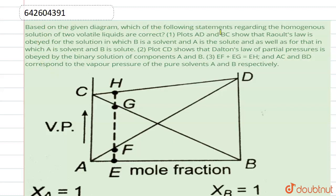Hello everyone. The question is based on the given diagram: which of the following statements regarding the homogeneous solution of two volatile liquids are correct? Statement 1: plots AD and BC show that Raoult's law is obeyed for the solution in which B is solvent and A is solute, as well as for that in which A is solvent and B is solute. Statement 2: plot CD shows that Dalton's law of partial pressure is obeyed by the binary solution of components A and B. Statement 3: EF plus EG is equal to EH, and AC and BD correspond to the vapor pressure of the pure solvent A and B respectively.